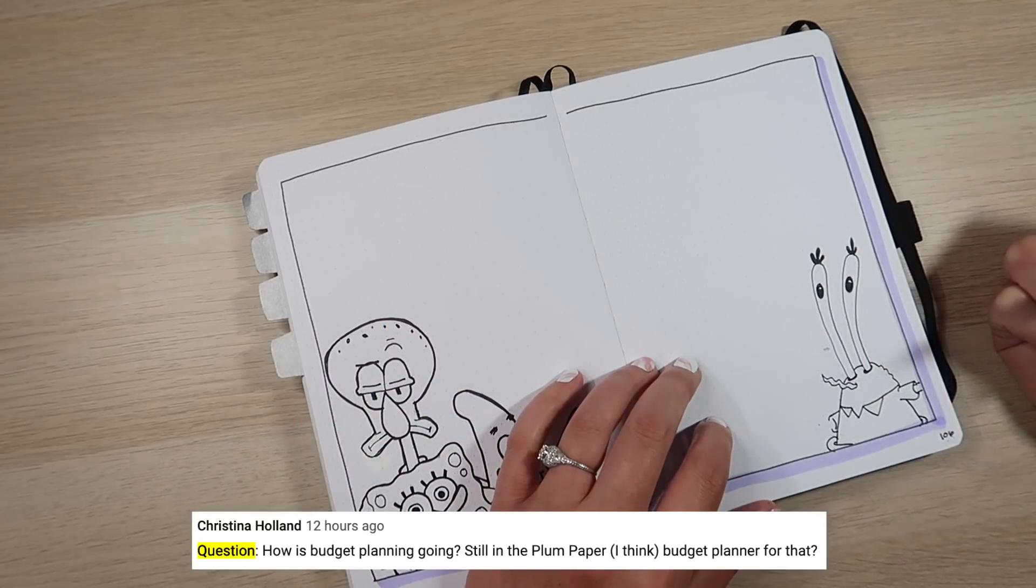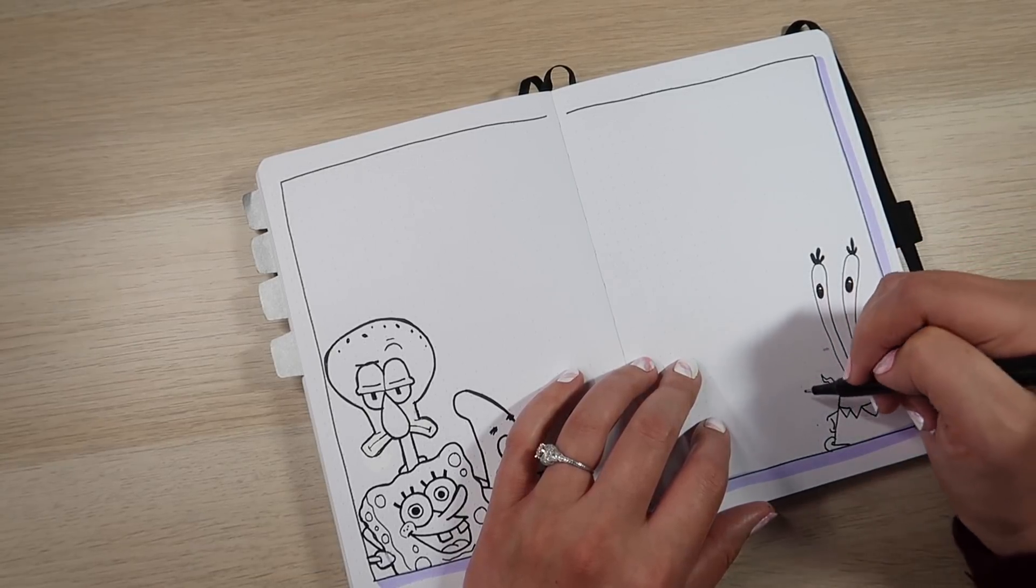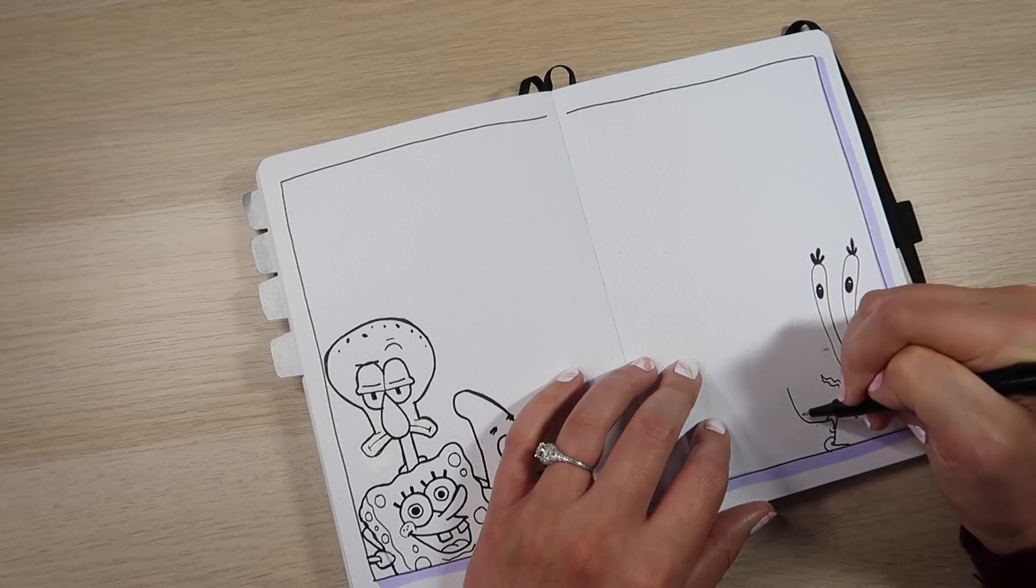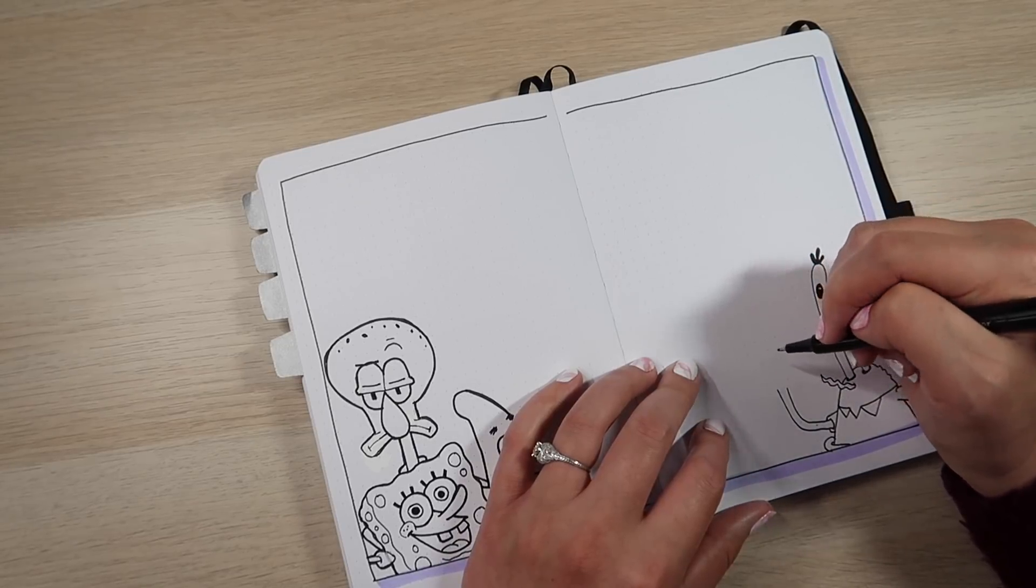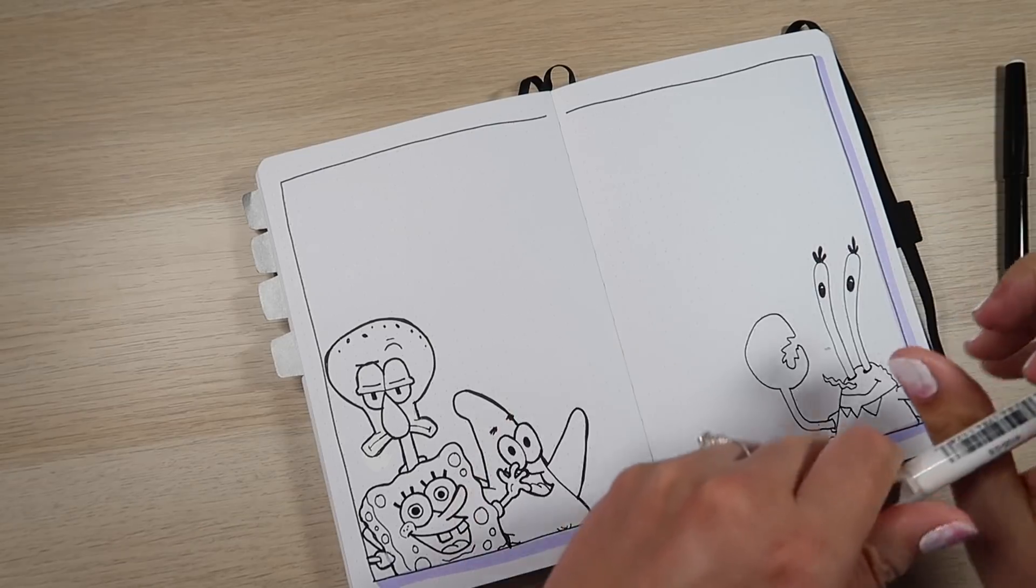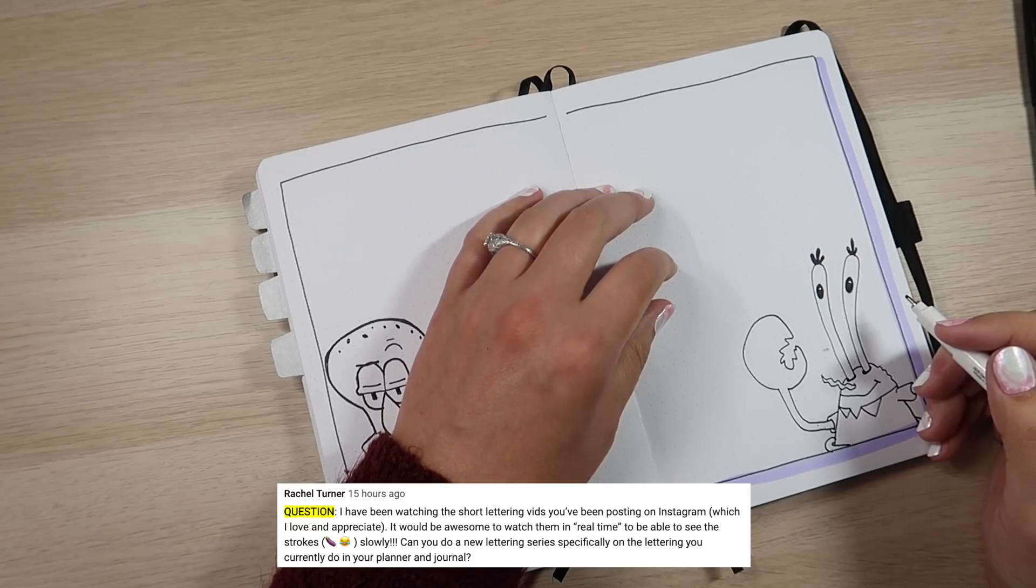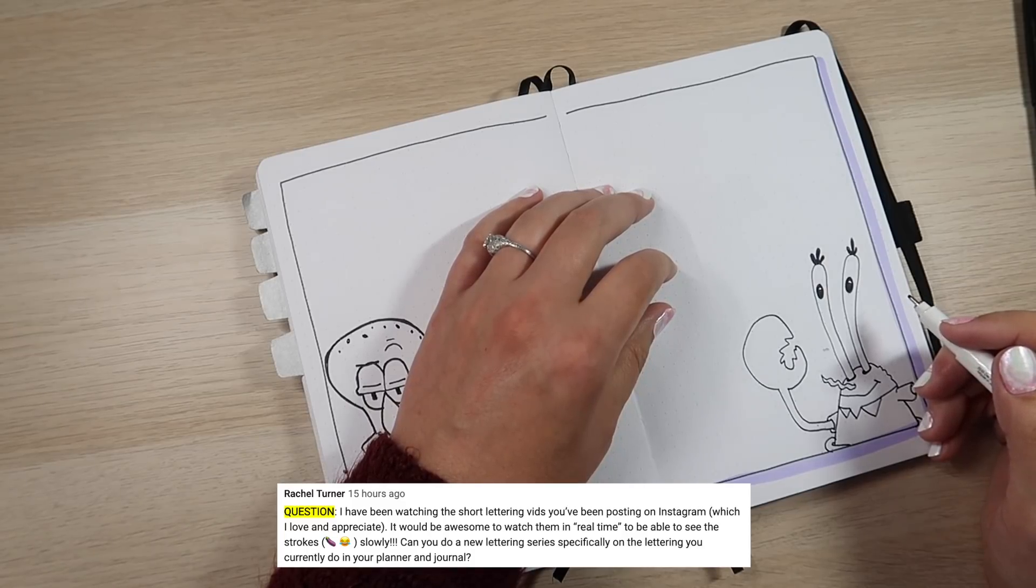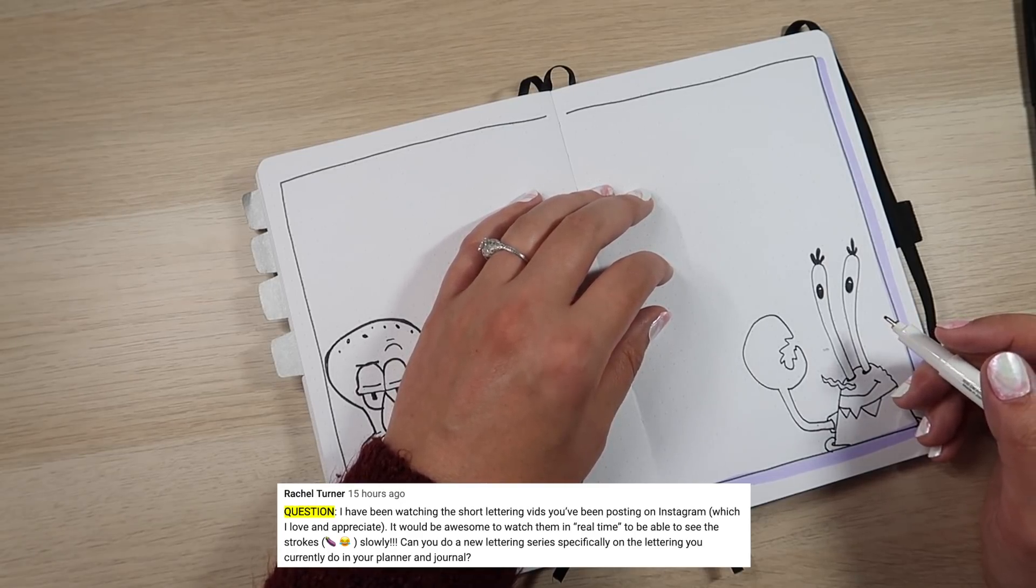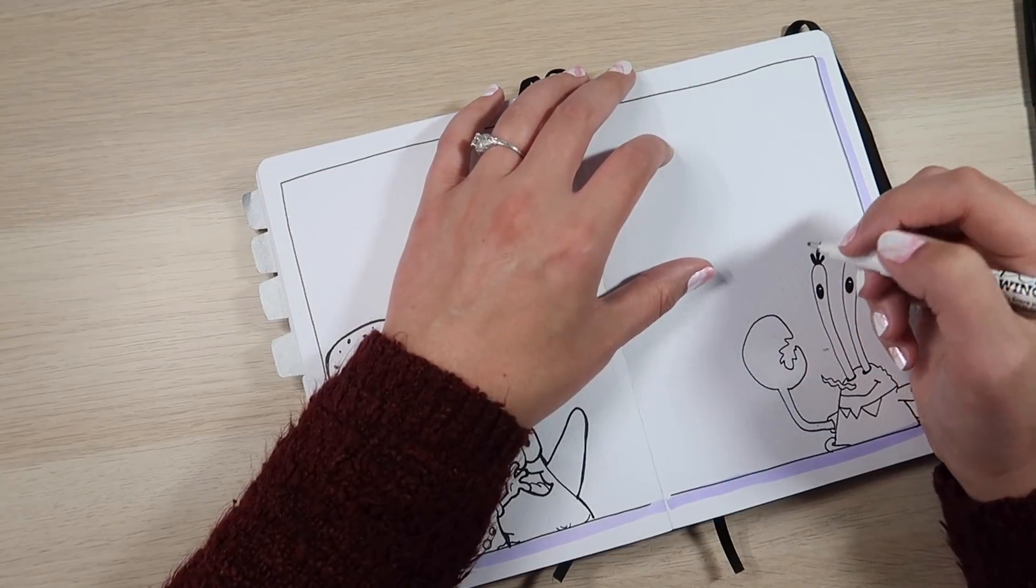Christina asked, how is budget planning going? Am I still in the plum paper budget planner? No, I'm not in the plum paper budget planner and my budget planning is going like shit. If you haven't watched the PowerSheets update, my budgeting has been basically non-existent. Something I still need to really work on pretty hardcore. Rachel Turner asked if I can do a new lettering series specifically on the lettering I currently do in my planner and journal. Yes, and that is something I am planning. So stay tuned.